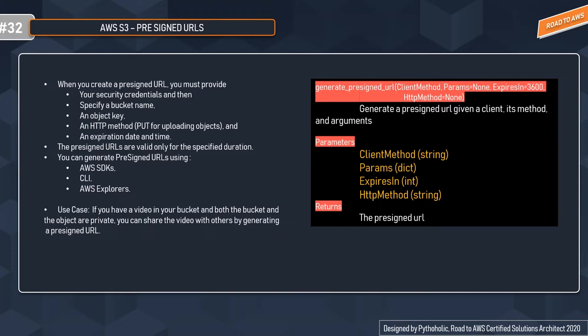When you create a pre-signed URL, you must provide additional information so that it points to the exact resource you want to deliver. This includes your security credentials, the bucket name, an object key, an HTTP method like PUT for uploading objects, and an expiration date and time. Pre-signed URLs are valid only for the specified duration. You can generate pre-signed URLs using AWS SDKs, CLIs, and AWS Explorer.